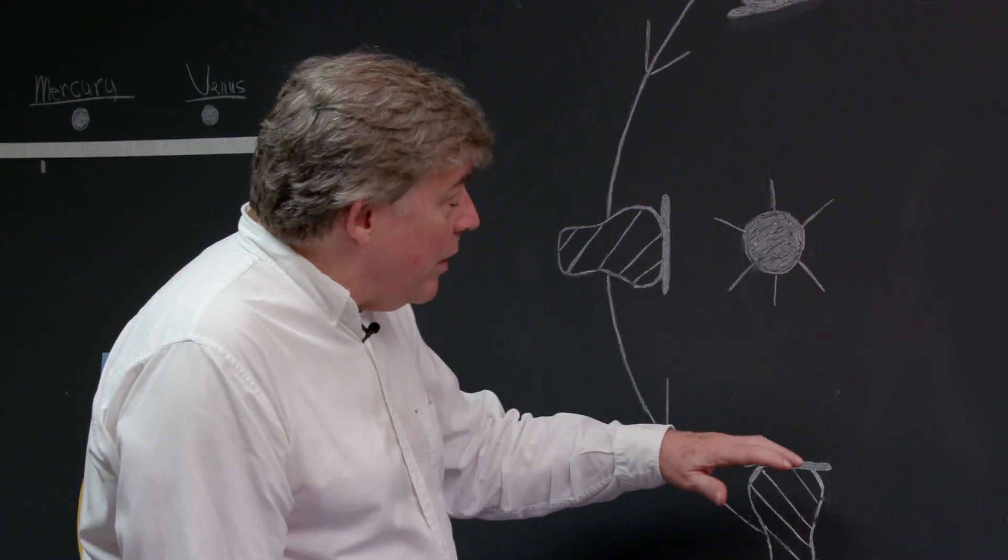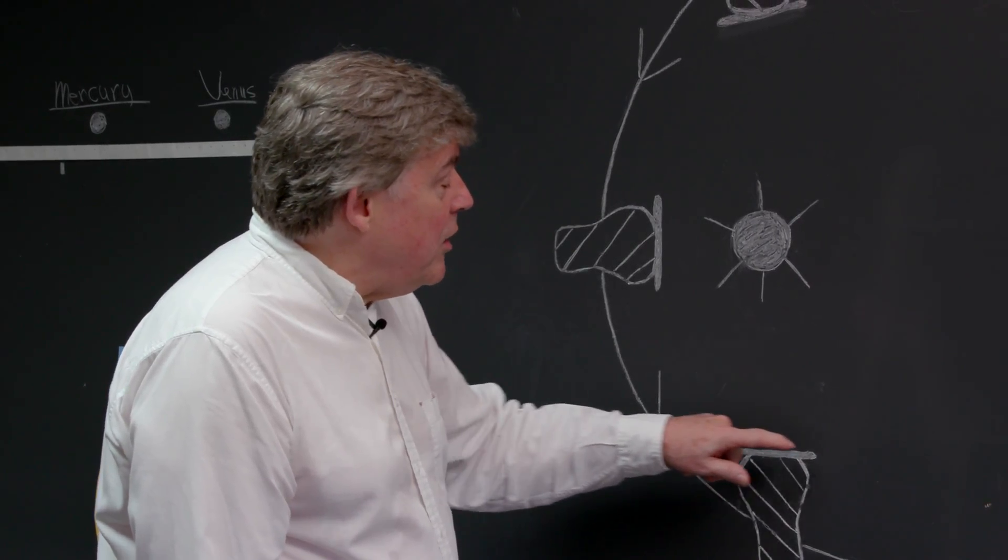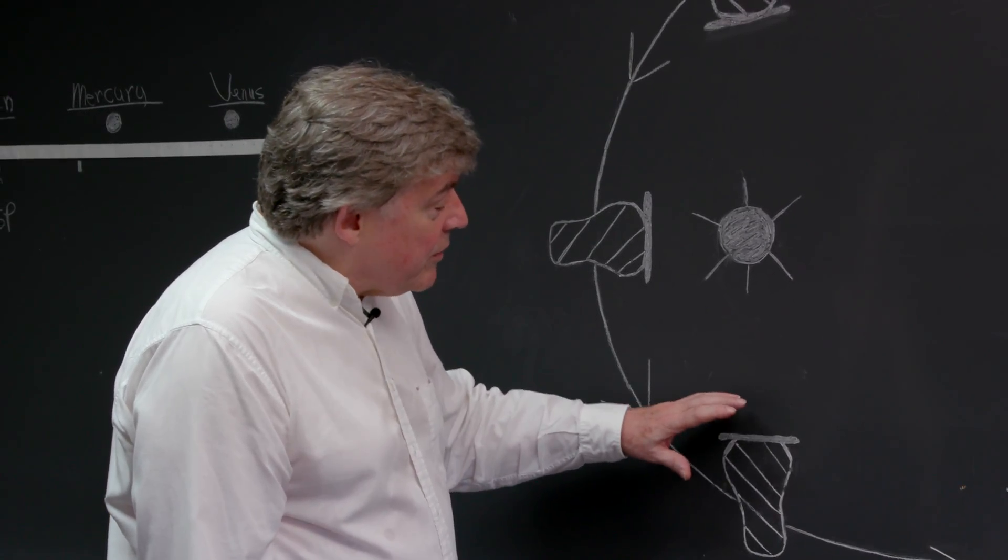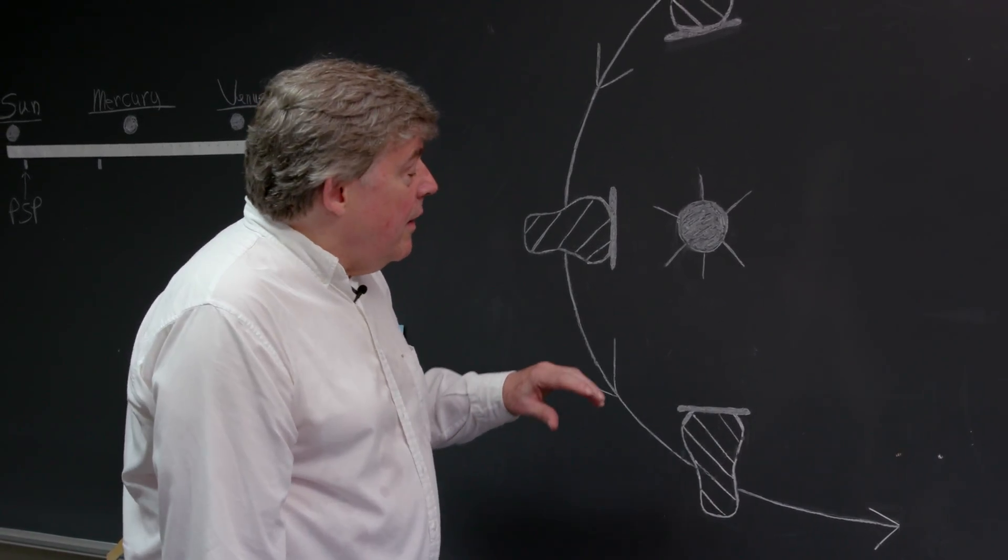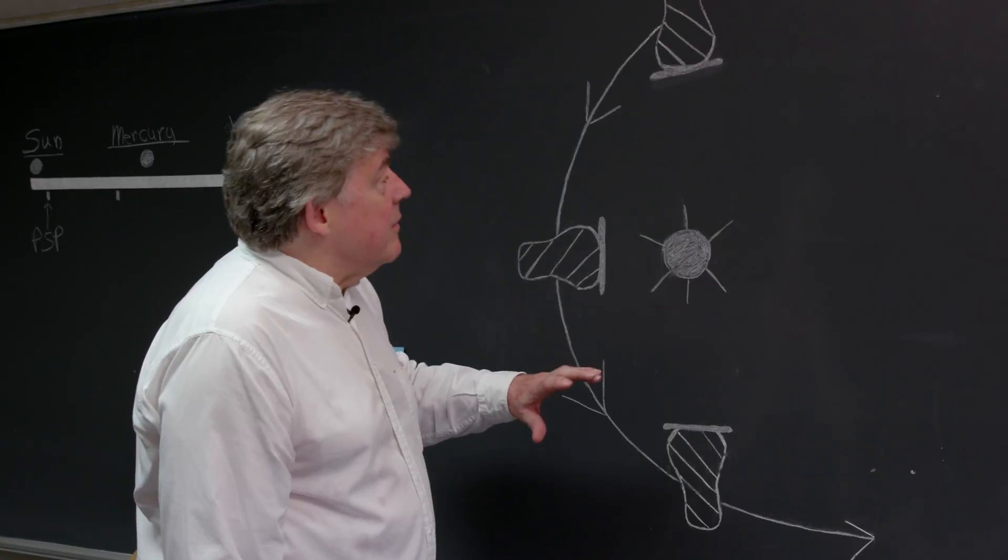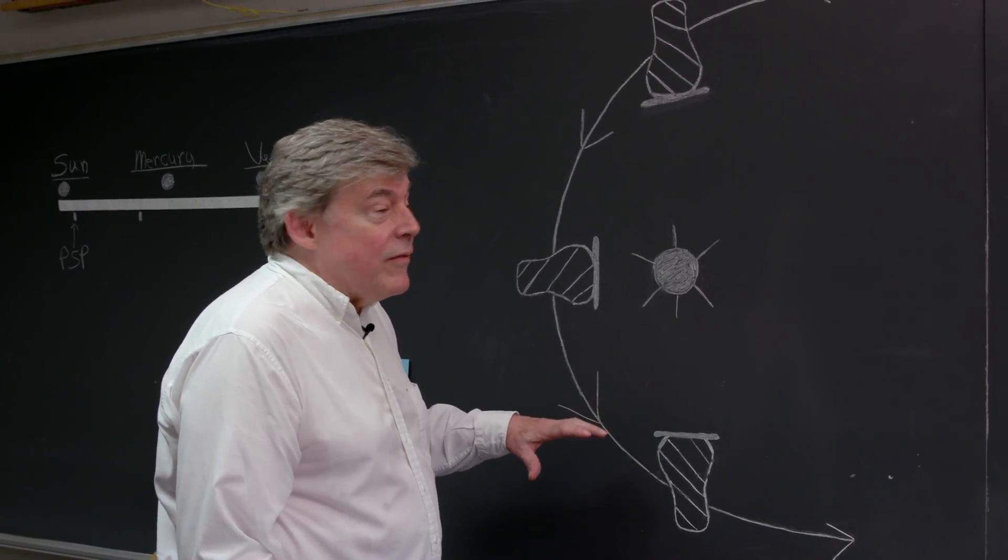How do we protect ourselves from that? Well, the spacecraft has been equipped with a heat shield on the front of the spacecraft that protects the spacecraft body from the heat of the Sun. And so that heat shield is really a giant technological advance for this project.